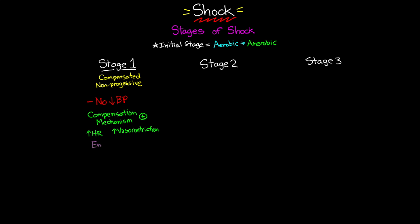Also in this stage, the endocrine system is beginning to release its hormones — specifically renin and antidiuretic hormone, as discussed in the previous lesson. Despite the lack of blood pressure drop, you should still be able to recognize that your patient is in shock. This is the ideal time to recognize those compensatory mechanisms are working and to treat the underlying cause.